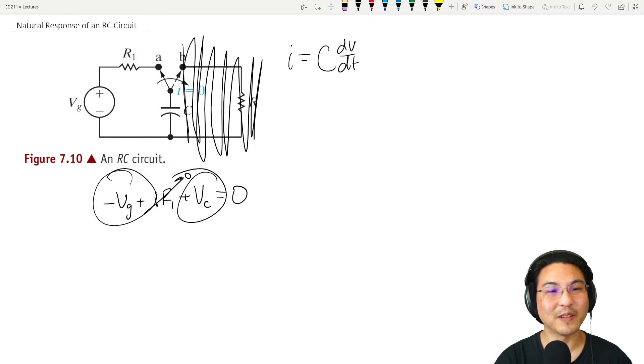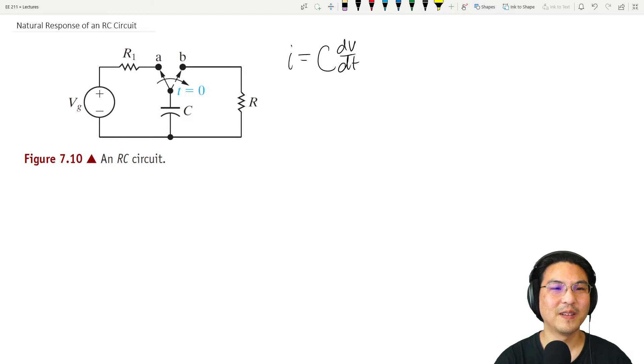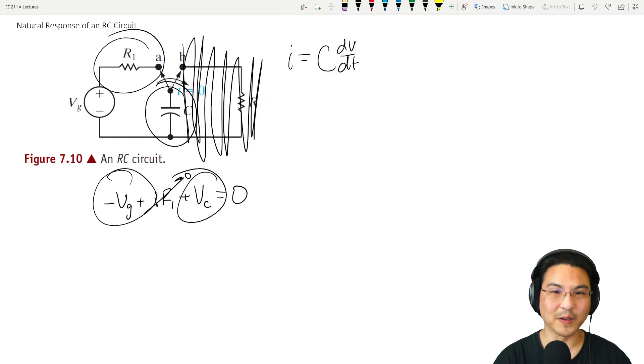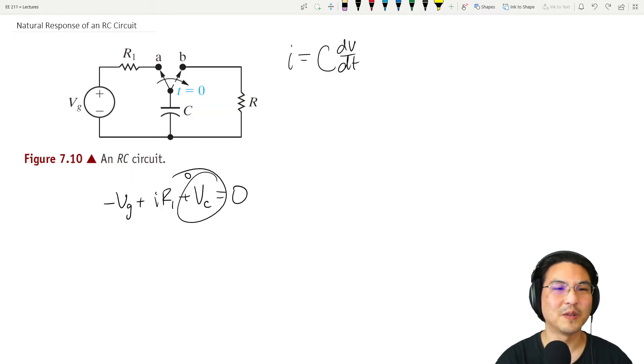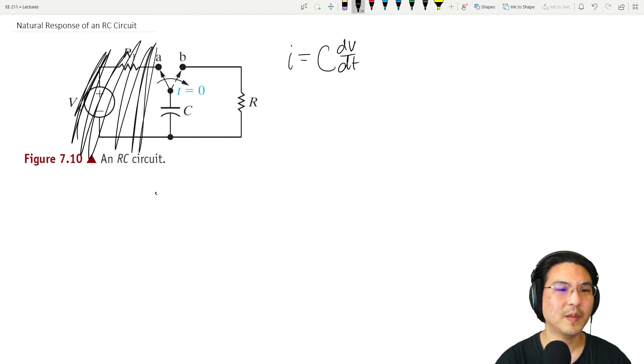That's when you wait a long time with the switch over in position A. And then now if we switch it over to B, then we can ignore this side of it. Now you just have a capacitor here with a voltage that we know, VG, and then it's connected to this resistor over here.